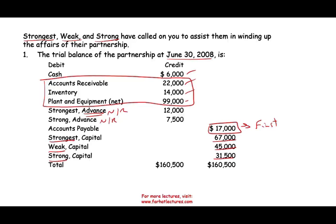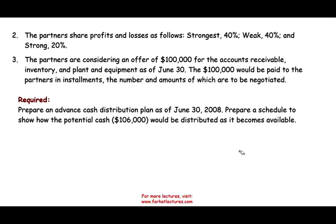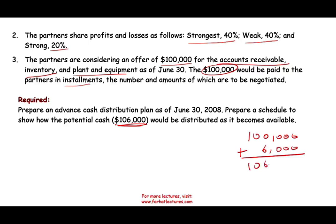The capital balances are: Strongest $67,000, Weak $45,000, and Strong $31,500. The partners share profit and losses as: 40% for Strongest, 40% for Weak, and 20% for Strong. The partners are considering an offer of $100,000 for all non-cash assets — receivables, inventory, and property, plant, and equipment — to be paid in installments. We need to prepare an advance cash distribution schedule to show how the $106,000 total ($100,000 from the sale plus $6,000 existing cash) should be distributed.